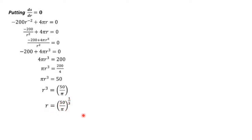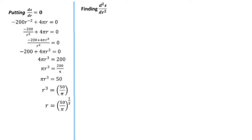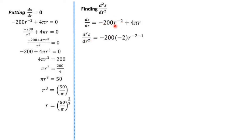To verify this is a minimum, we compute d²S/dr². From dS/dr = −200r⁻² + 4πr, differentiating again gives d²S/dr² = 400r⁻³ + 4π = 400/r³ + 4π. Substituting r³ = 50/π: d²S/dr² = 400/(50/π) + 4π = 8π + 4π = 12π > 0. Since d²S/dr² > 0, the surface area is minimum at r = (50/π)^(1/3).